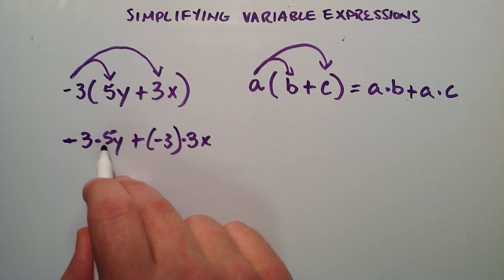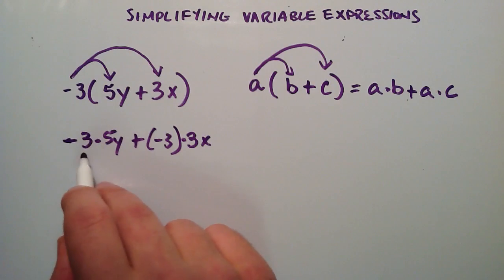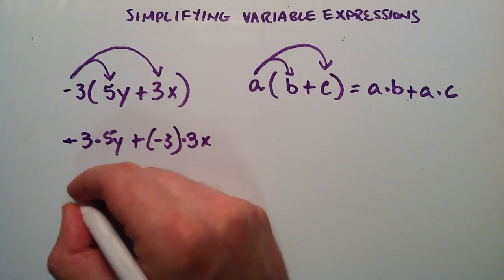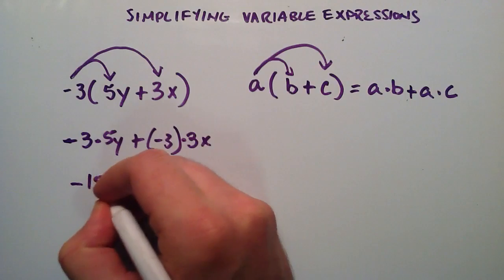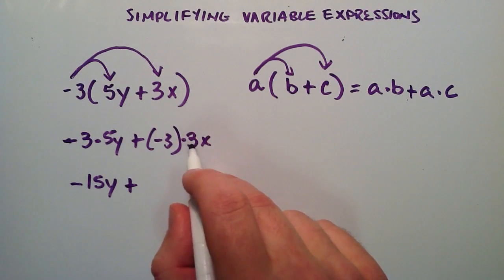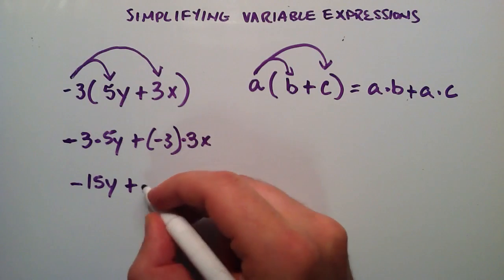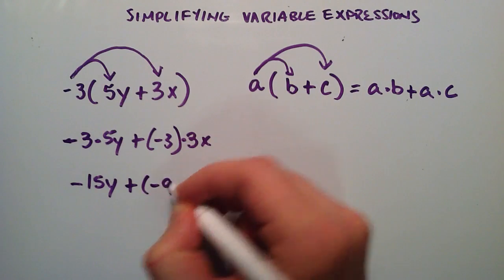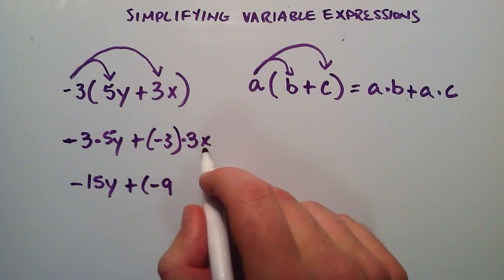A 3 times 5 is 15, so that means that a negative 3 times 5 is negative 15. So this becomes negative 15Y plus a negative 3 times a positive 3 is a negative 9. So this is negative 9 times X.